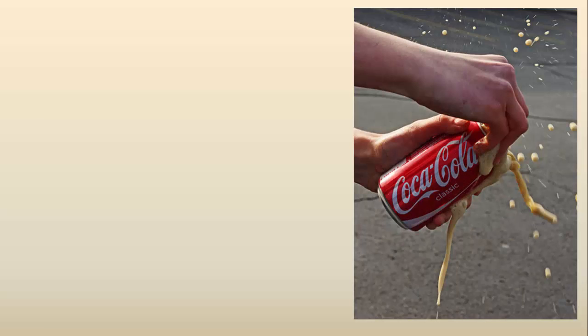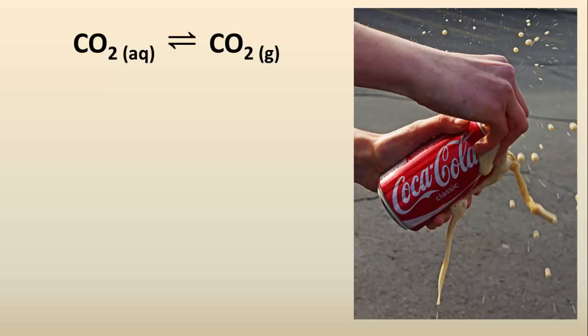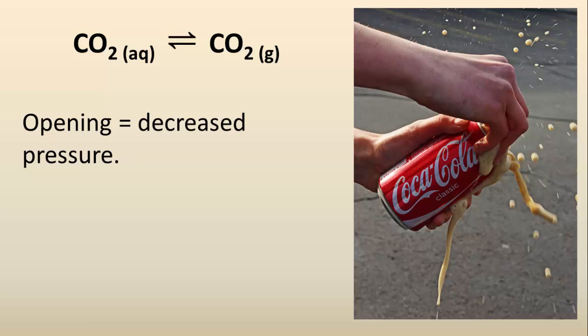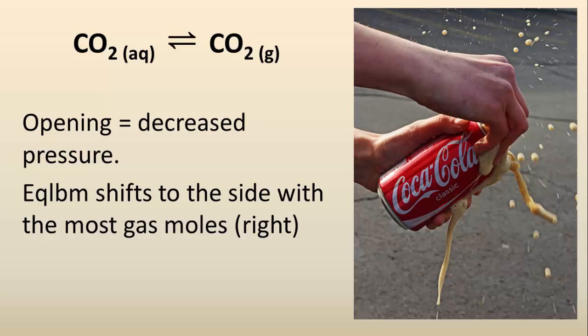Now let's look at something a bit more familiar — most of you would have done this before. The dissolved carbon dioxide inside the sealed soda can is in this equilibrium: the dissolved aqueous carbon dioxide is in equilibrium with the gaseous carbon dioxide. When the can is sealed there is a high pressure inside the can. When the can is opened there is a rapid decrease in pressure. The equilibrium will shift to the side of the reaction that results in an overall increase in pressure to reverse the effect of the change, which of course will be the side with the most number of gas molecules.